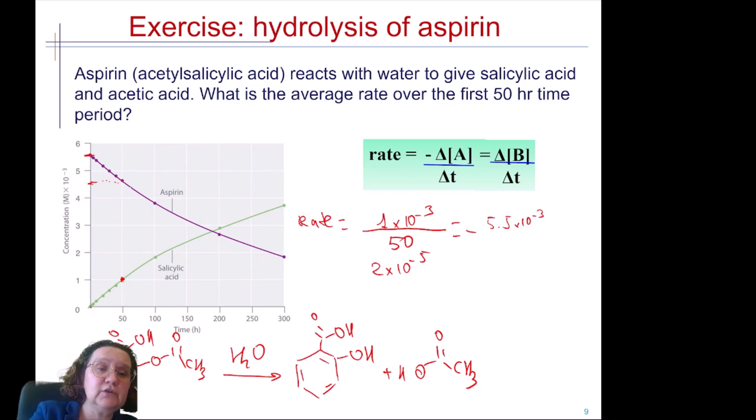And after 50 hours I've got somewhere here again between 4 and 5 and I'm going to select 4.5×10⁻³ divided by 50. And again it's the same number and it has to be the same rate because